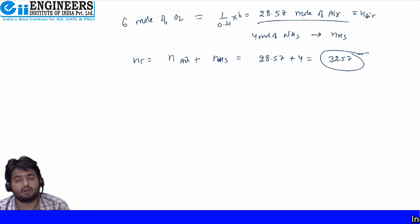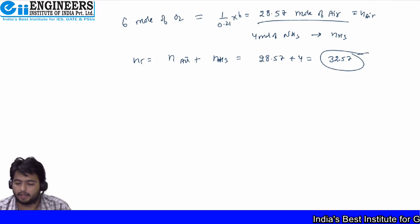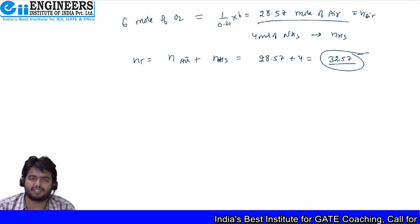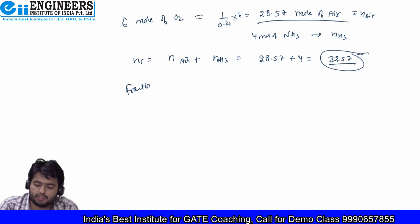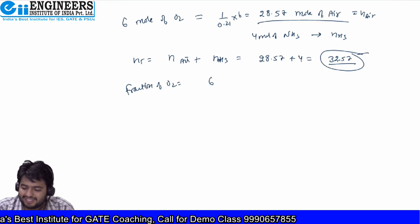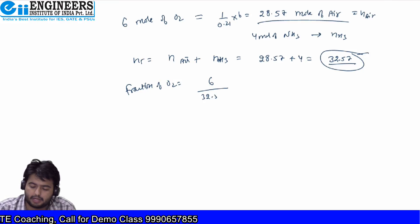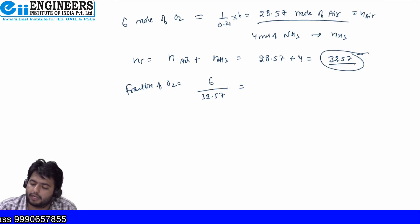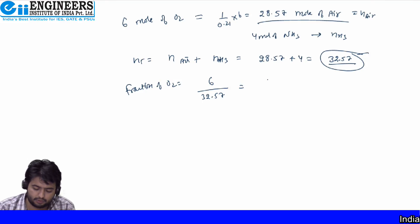This is the total number of moles fed to the reaction mixture. The mole fraction of oxygen = 6 moles of oxygen / 32.57 total moles = 0.1842. So this is the answer for this question.